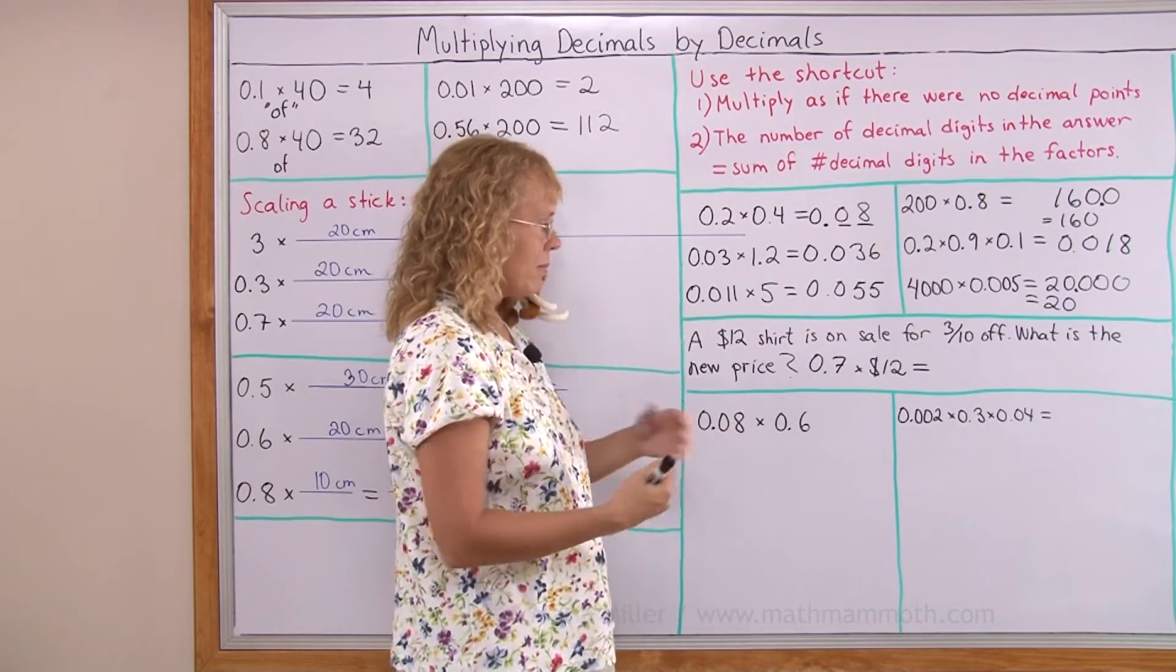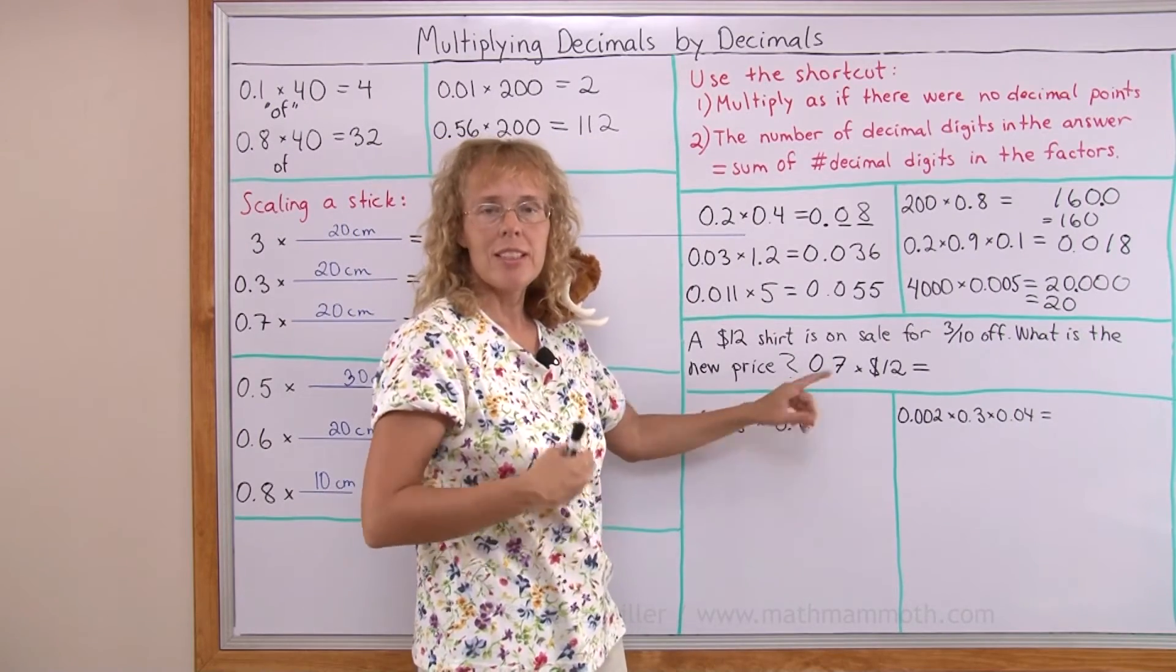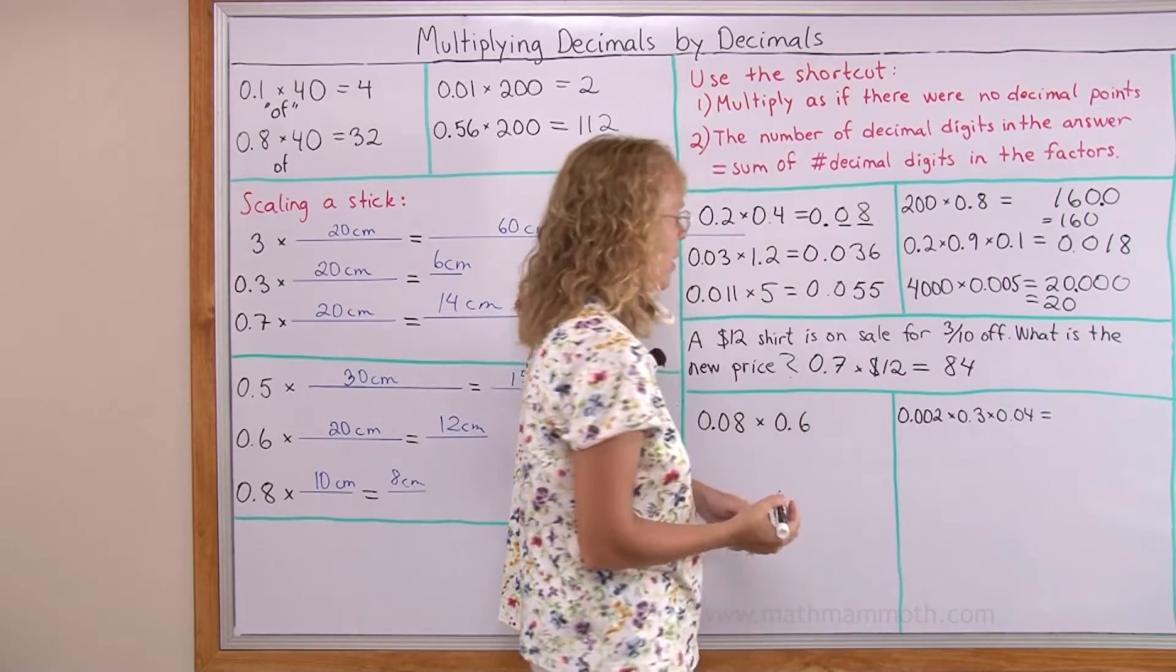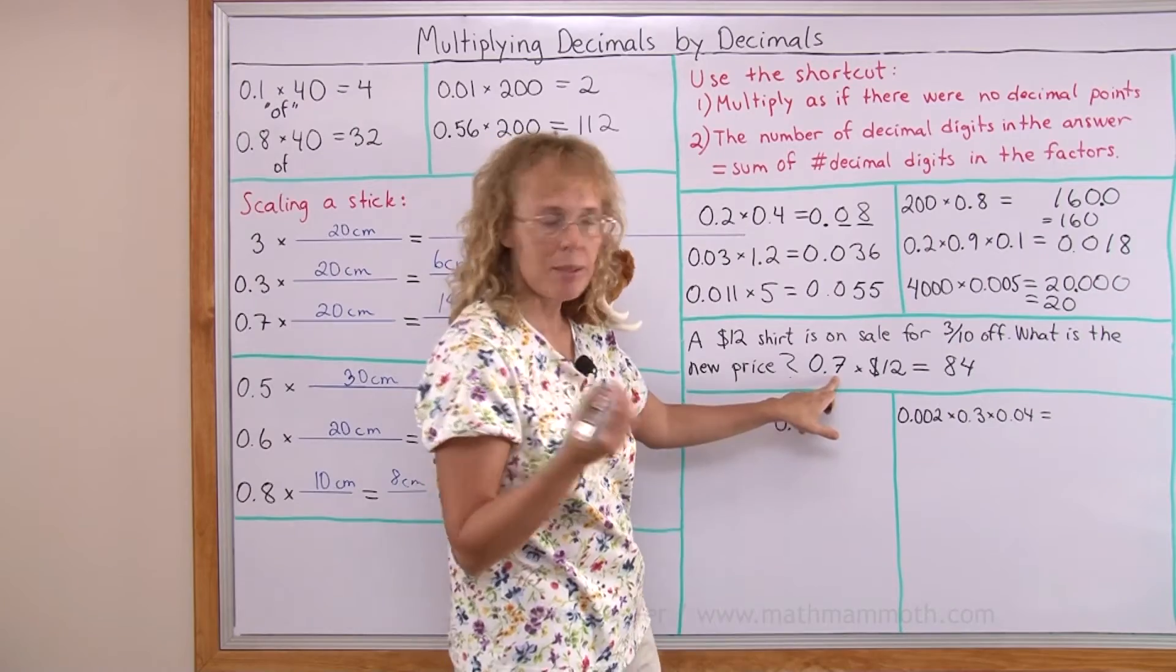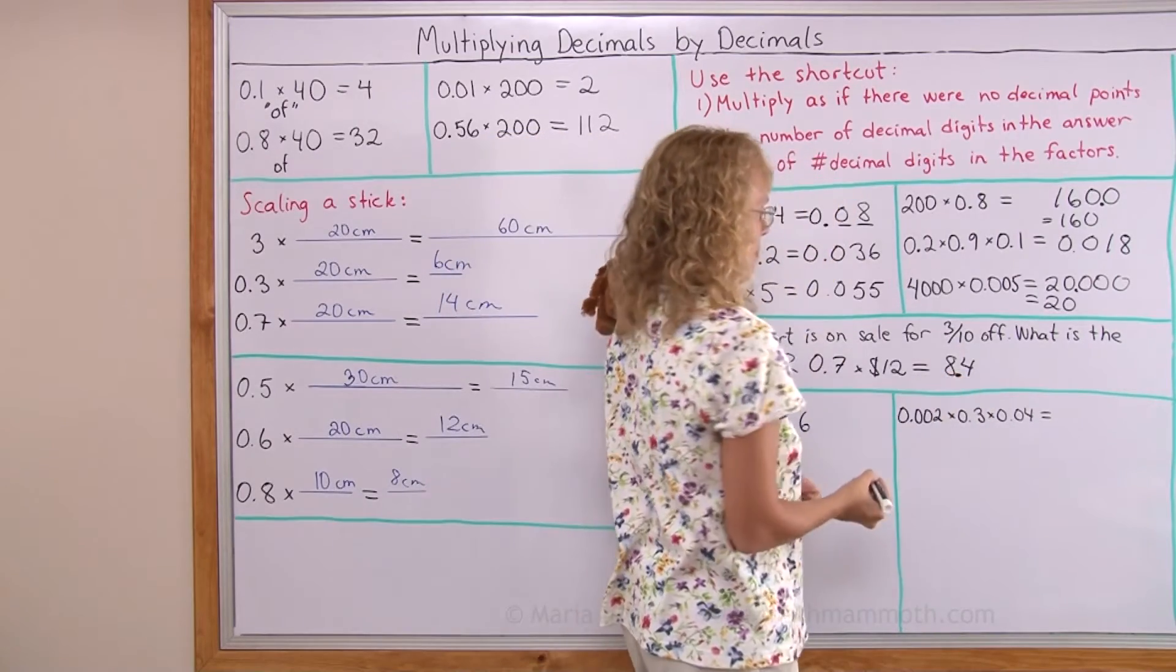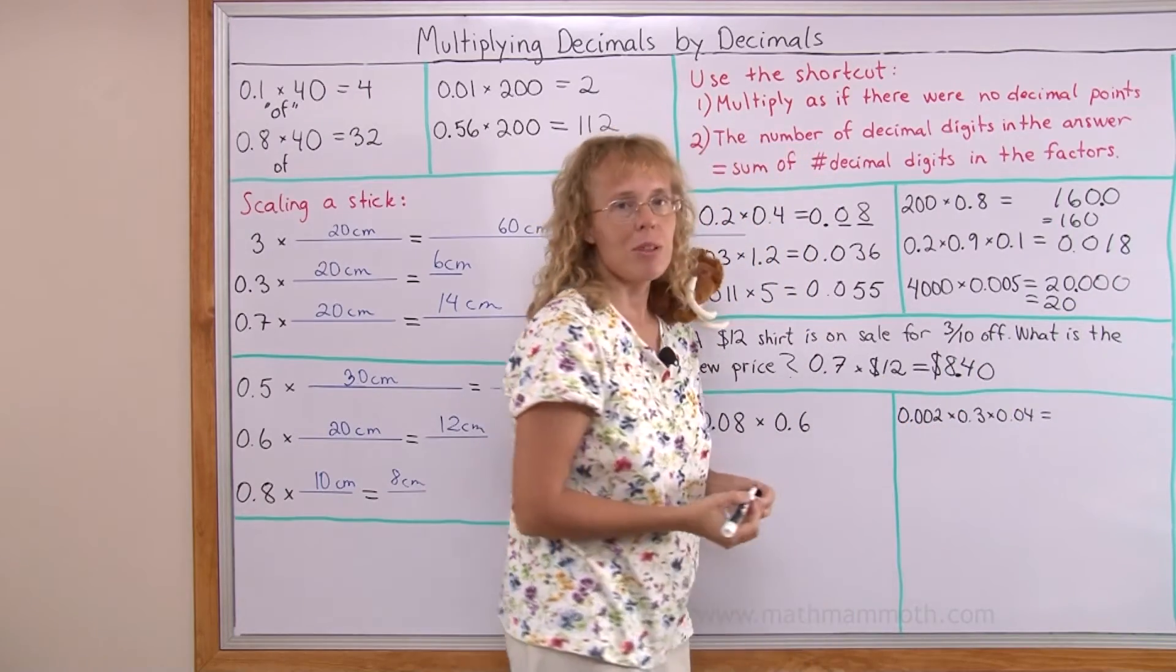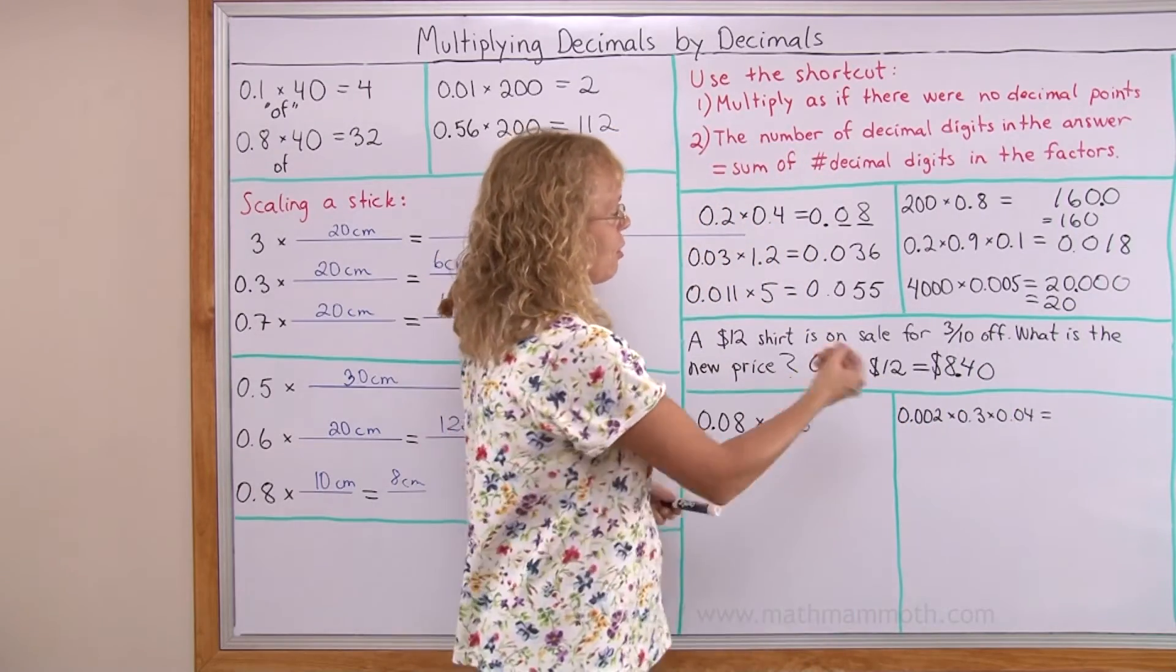And now multiply as if there was no point here. Seven times twelve equals eighty-four. And then check. Okay? I need to put one decimal digit there. So the point goes there. And then put your dollar sign here. And then, well, because it's a money amount we want to have the cents there as forty cents.